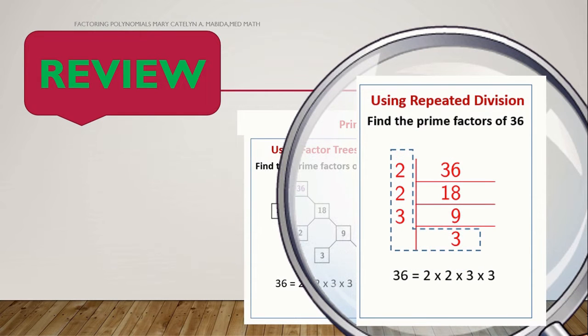In repeated division, numbers are placed like so. Look at the division bracket being inverted. So, how does it work? First, you look at your number. If your number is an even number, you can start factoring it using number two. So, 36 divided by 2 is 18. 18 divided by 2 is 9. Now, we have an odd number this time.